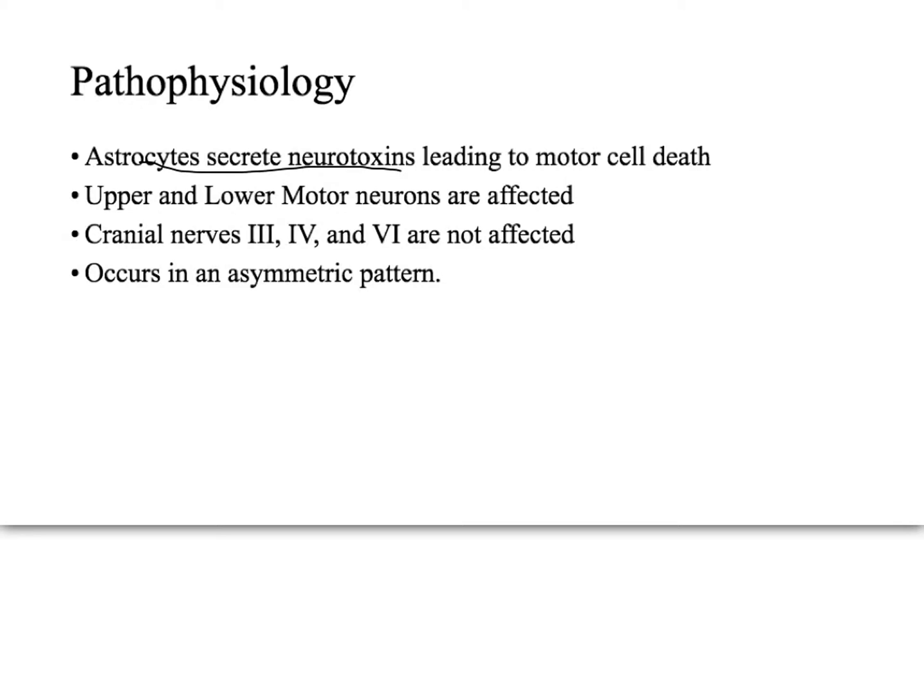In almost every case, cranial nerves 3, 4, and 6 are not affected, so you still get movement in your eyes. That's the basis of the computerized systems — it's basically how Stephen Hawking communicates. He's able to move his eyes, and by tracking that movement, the computer is able to speak for him.